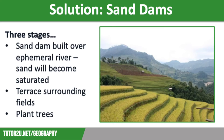Secondly, fields surrounding the river will be terraced, with steps built into the land so that the soil won't wash away when it rains and water will soak into the ground instead. These terraces work like the buns described earlier and are pictured on the screen.